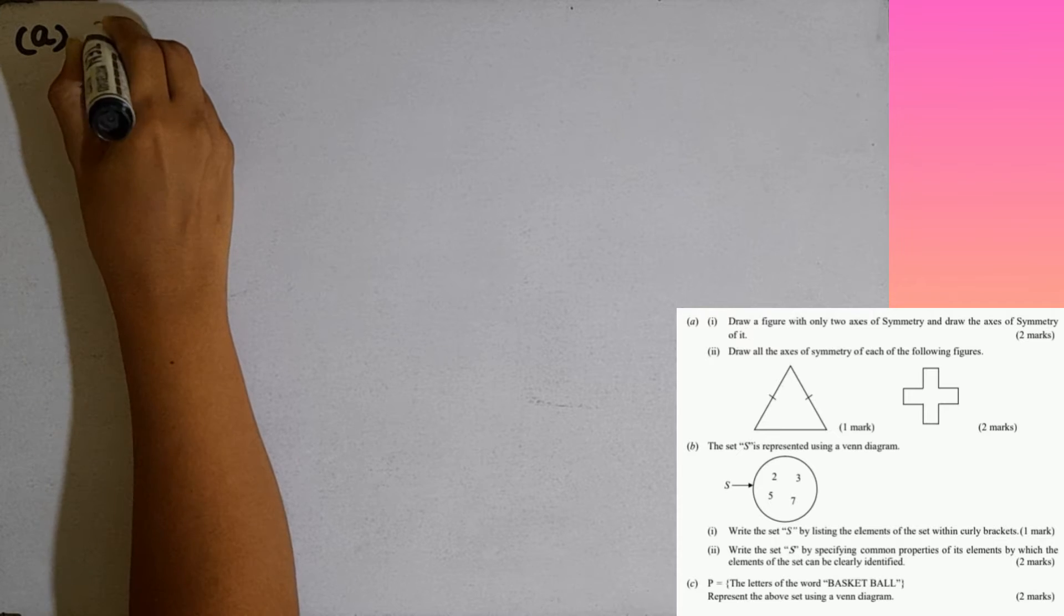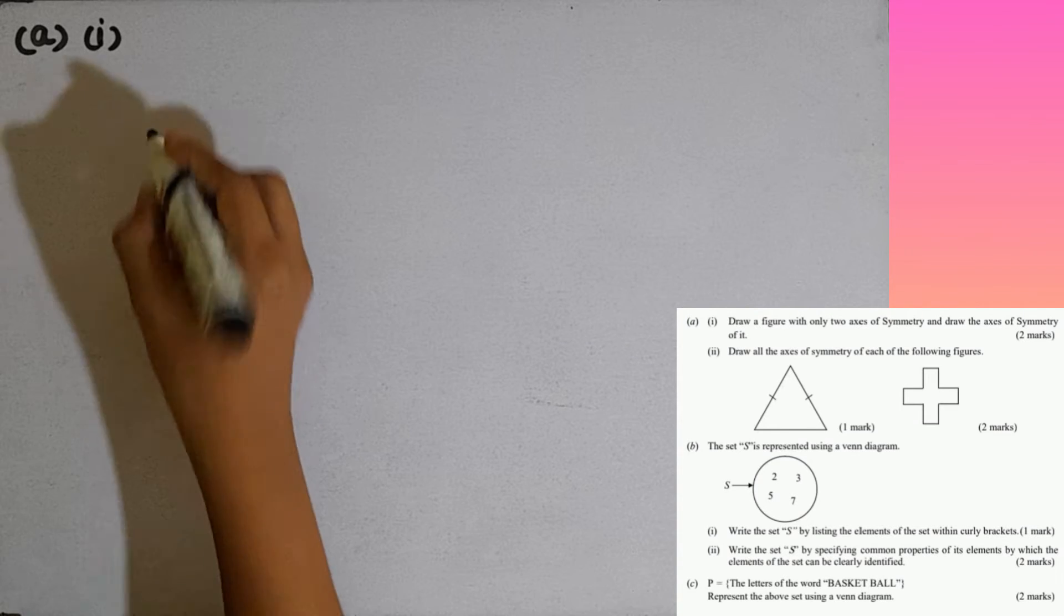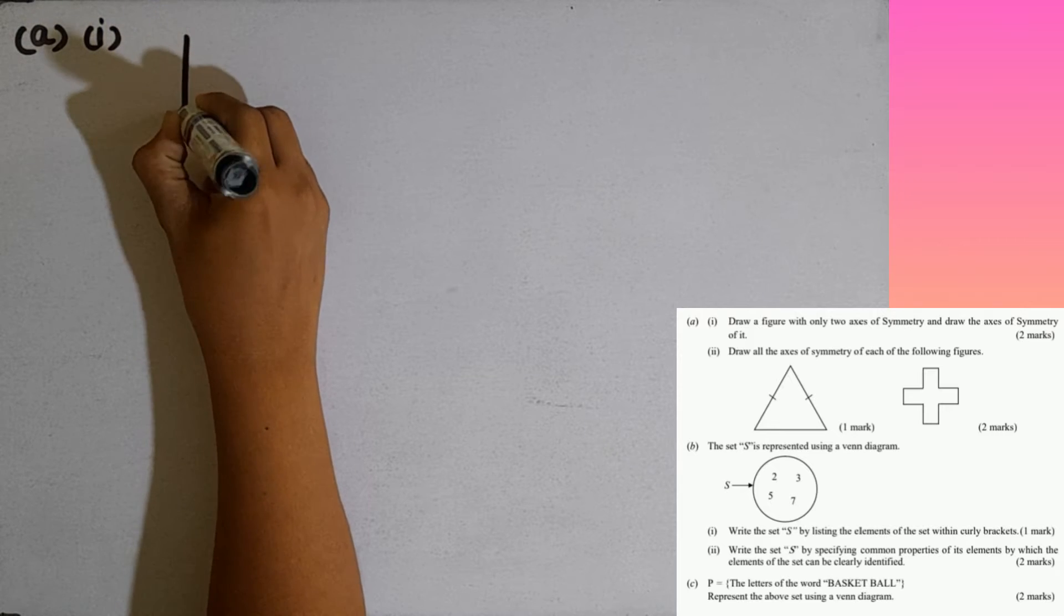Part A, first question. Draw a figure with only two axes of symmetry and draw the axes of symmetry of it. The best example for this is the rectangle. I will draw a rectangle like this.